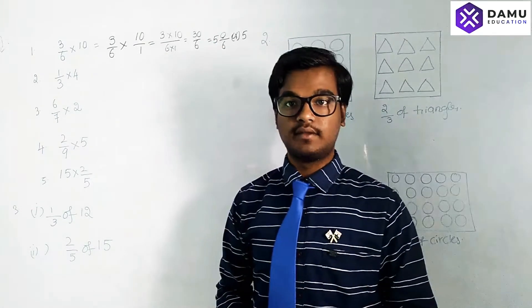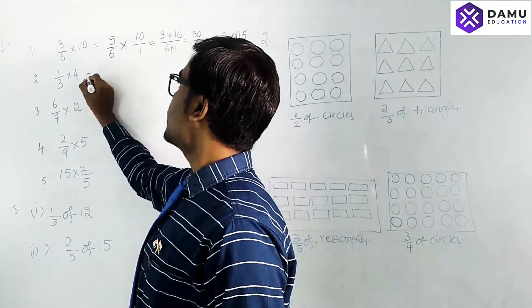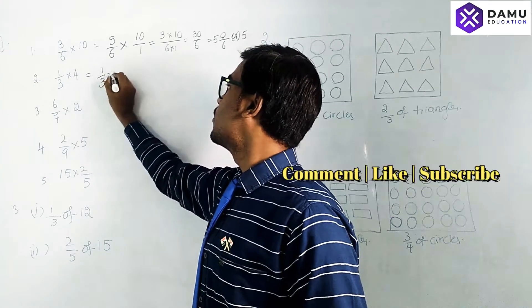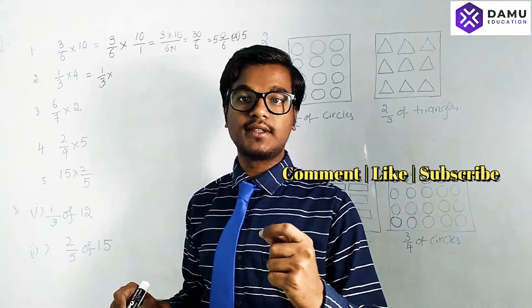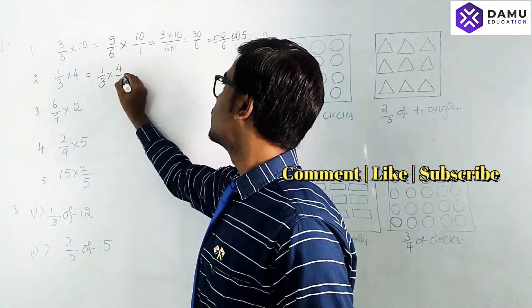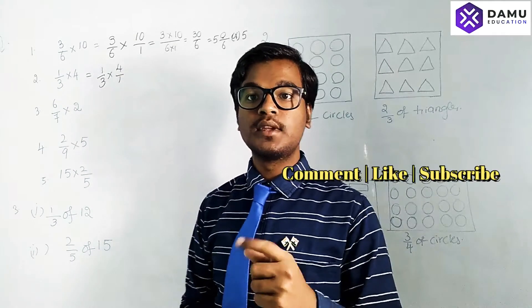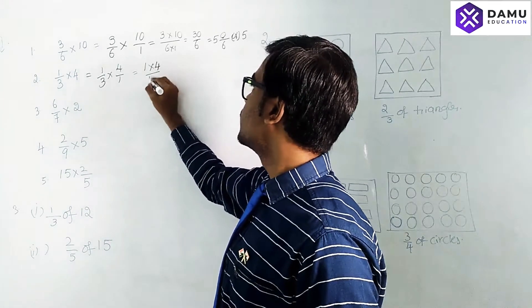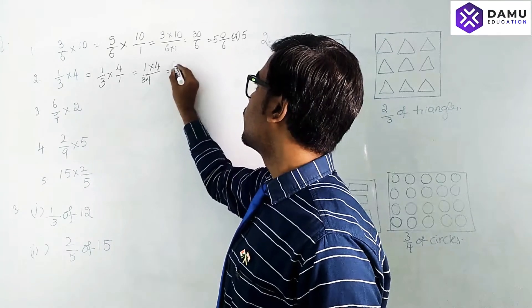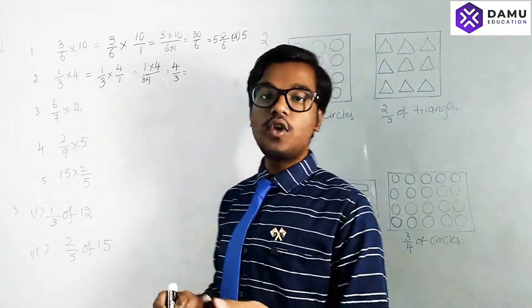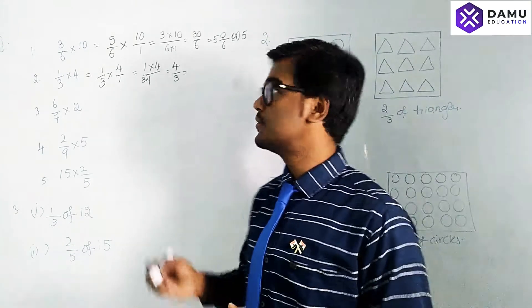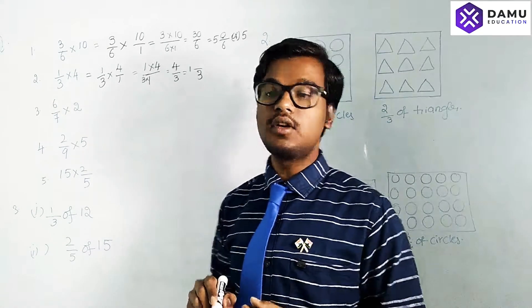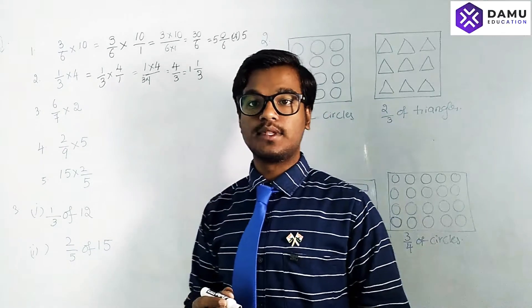Next: 1/3 × 4. Write it as 1/3 into 4/1. Numerators multiplied: 1 × 4 = 4, denominators: 3 × 1 = 3, giving 4/3. To express as a mixed fraction: the nearest multiple of 3 is 3 (which is 1 × 3), and we need to add 1 to get 4. So 4/3 = 1 and 1/3.